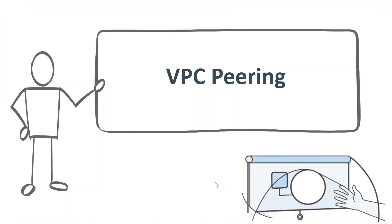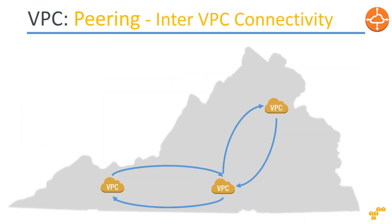We are going to see what VPC peering is and when it is needed. In any production deployment in a region like Virginia or Oregon, you will have more than one VPC — one for dev, another for prod, another for testing. Sometimes VPCs are split by team: administrative, production, and monitoring. All of them need to talk to each other, which is when VPC peering comes into picture, allowing communication between two VPCs.